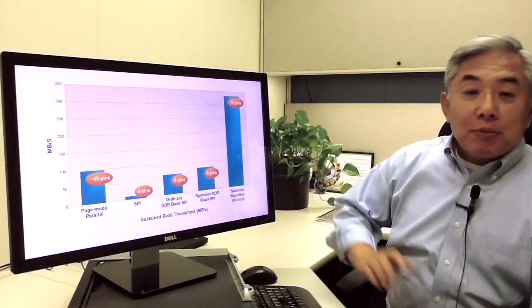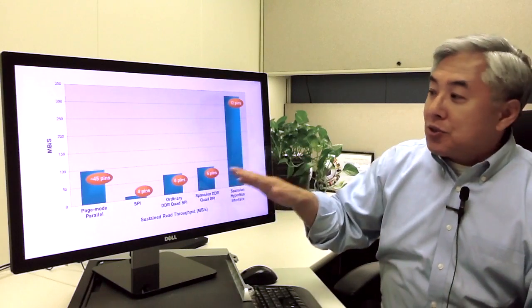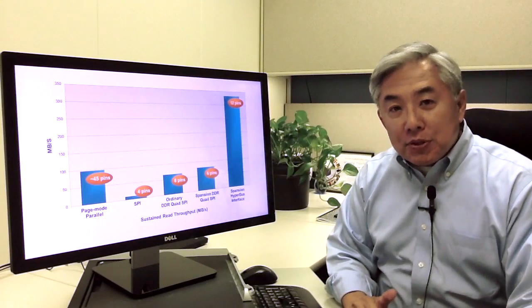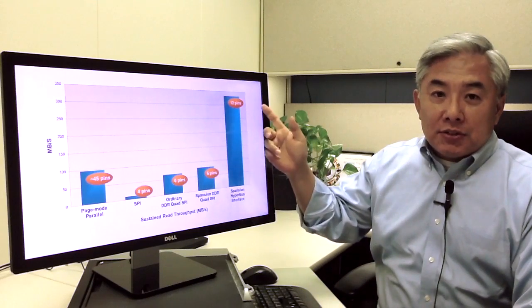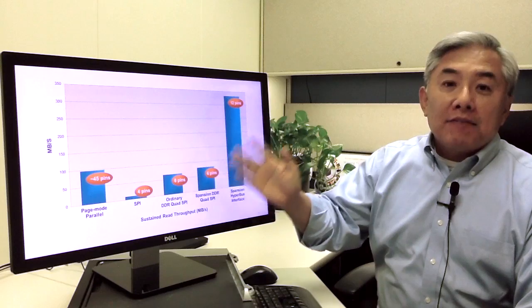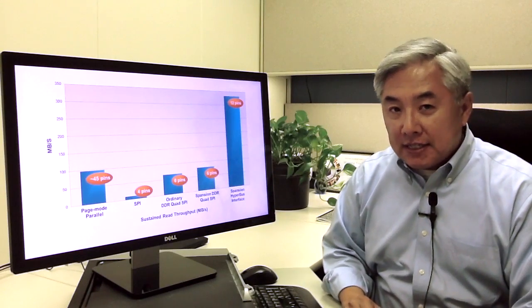You see at the very right, this is the HyperBus interface. Compared to all the other solutions, you can see it's extremely fast. It goes up to 333 megabytes per second with only an incremental increase in pin count. With only 12 pins, you can take 5 times the performance of a regular quad SPI device.